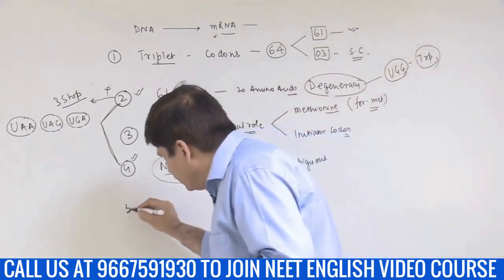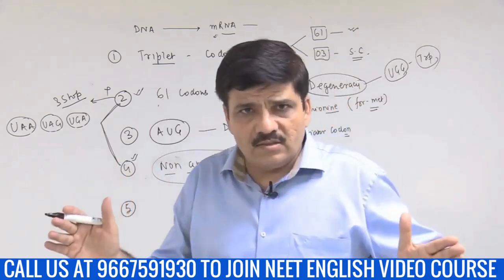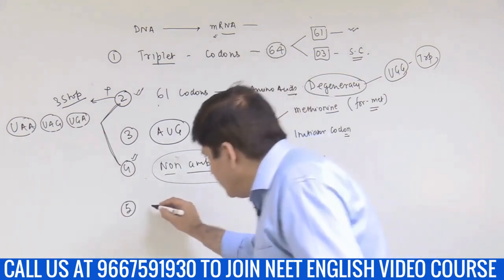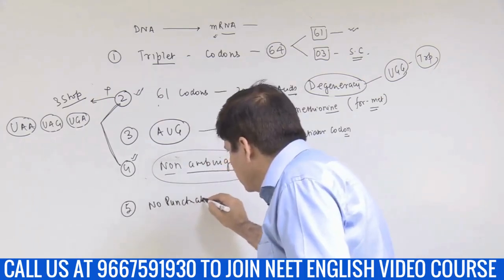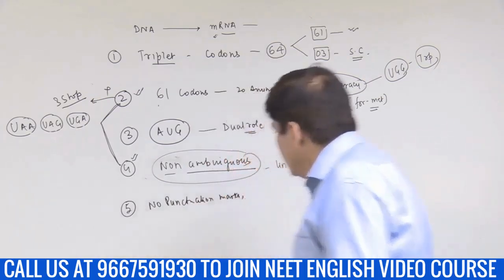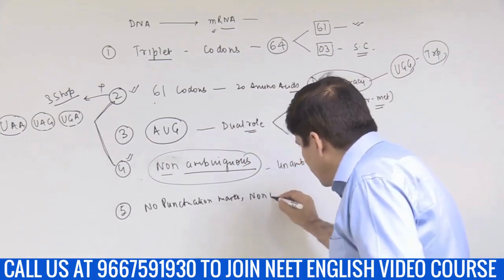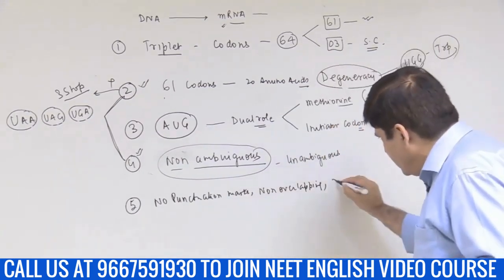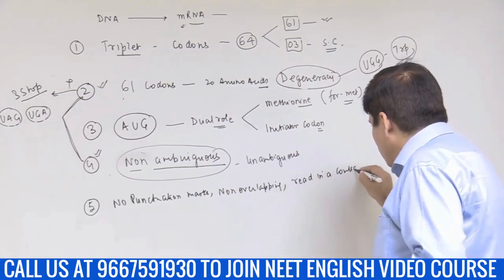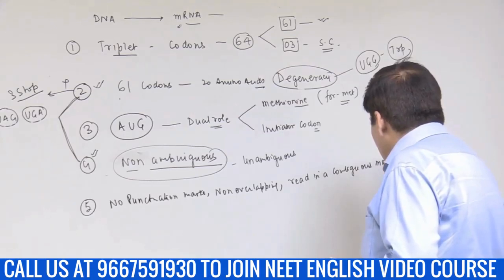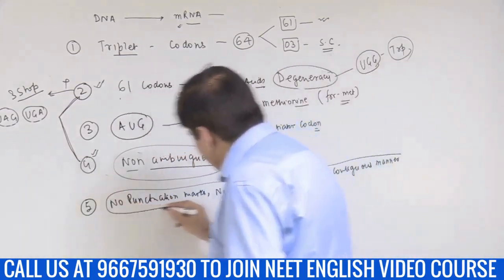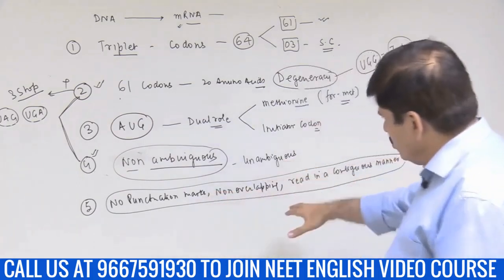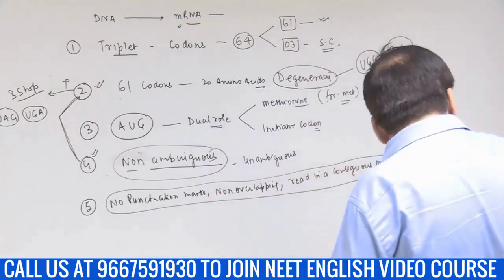The fifth point is that this genetic code doesn't have any punctuation marks — it is comma-less. It is non-overlapping, and a very important term from your NCERT: it is read in a contiguous manner. There are no punctuation marks, no overlapping, and it is read in a contiguous manner.